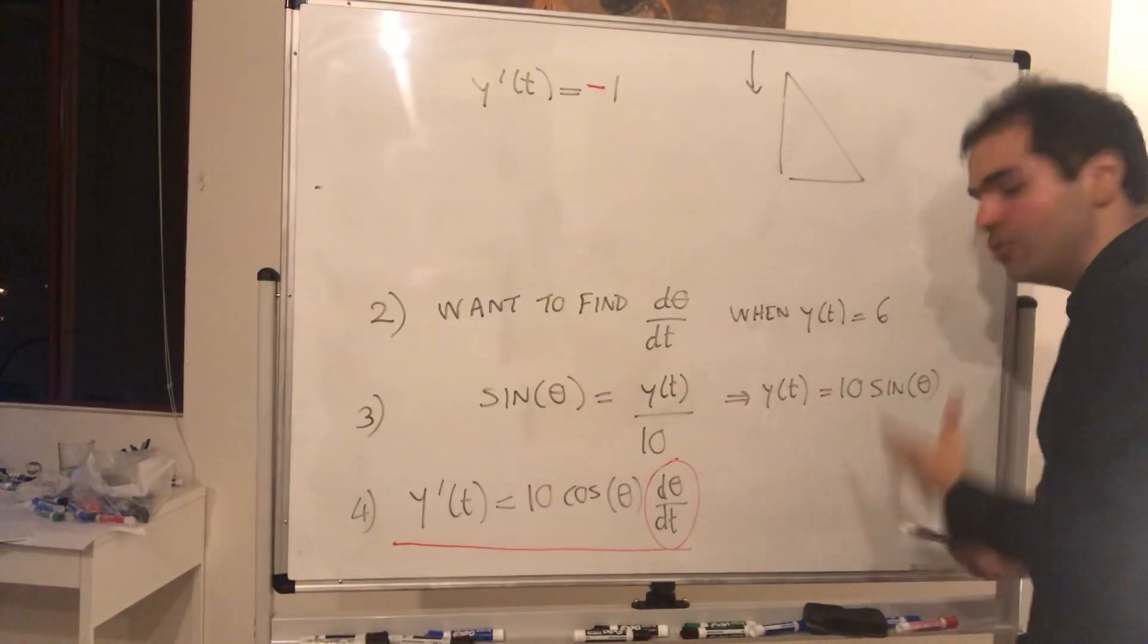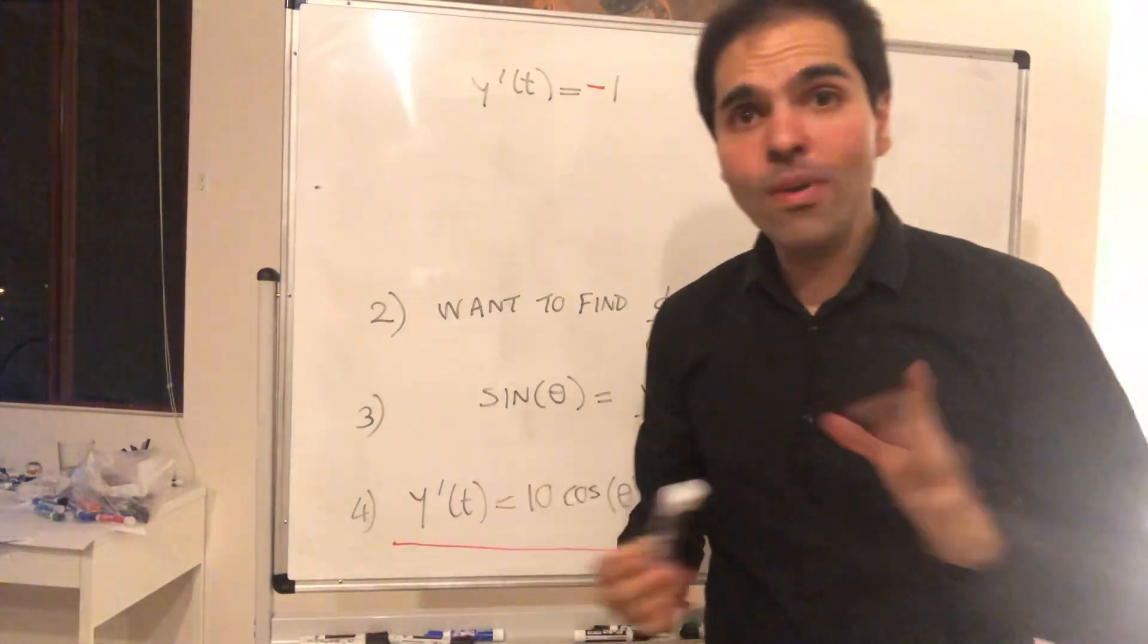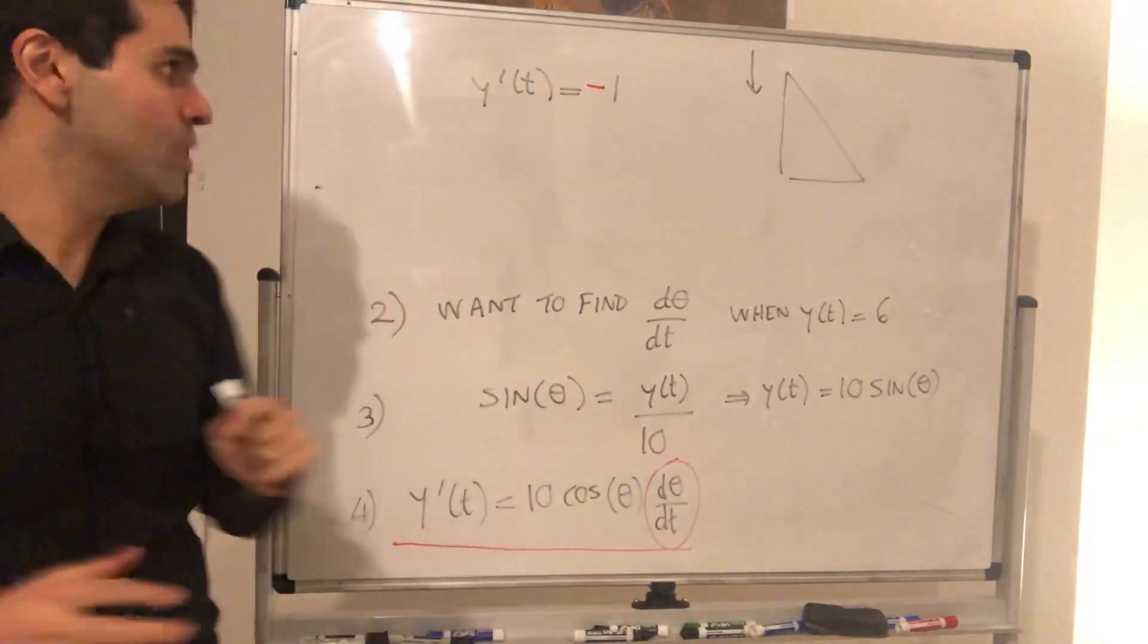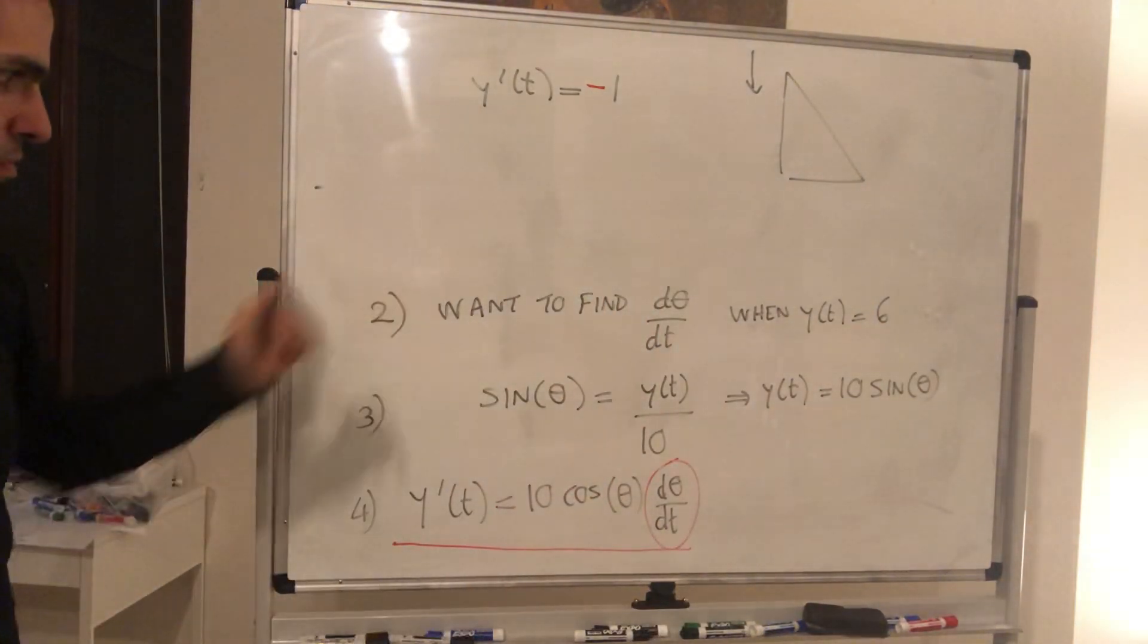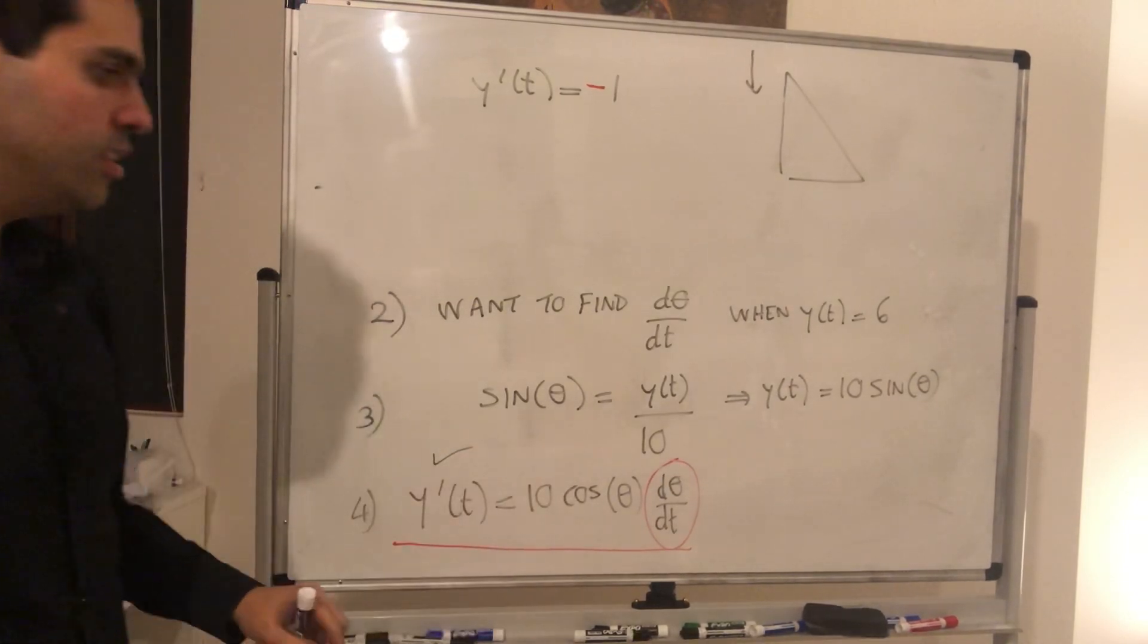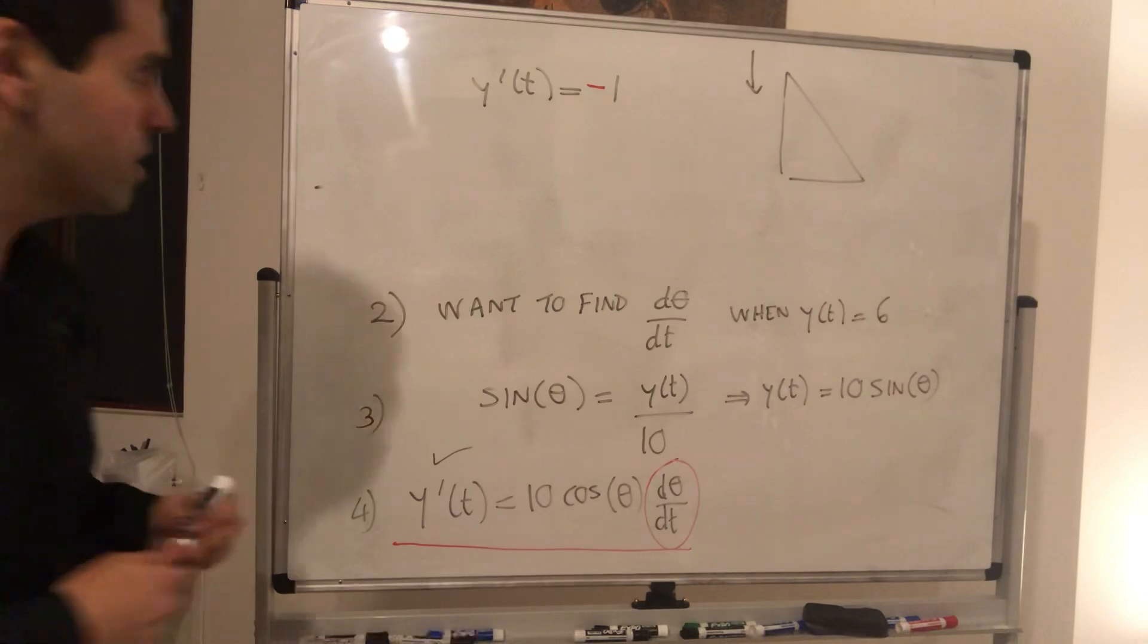And that's very important in related rates. Always ask yourself, is our quantity increasing or is it decreasing? So that, okay, we figured out. And now what we need to do, we need to figure out cosine of theta.